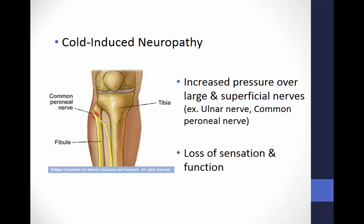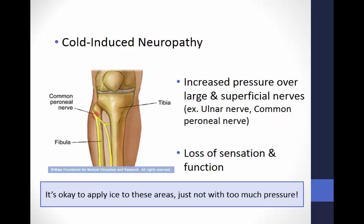Cold-induced neuropathy can occur when too much pressure is applied to an elastic wrap securing an ice pack over a large superficial nerve, resulting in over-cooling of the nerve. Neuropathy causes a loss of sensory function, motor function, or both. Two common areas for cold-induced neuropathy are the ulnar nerve at the elbow and the common peroneal nerve. It is okay to apply ice to these areas — you may want to consider placing a paper towel between the ice and the skin, or reducing the amount of pressure with which the ice is wrapped.